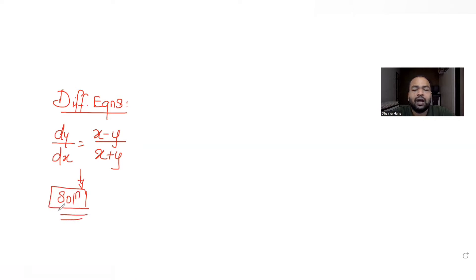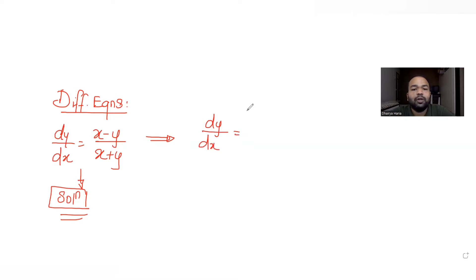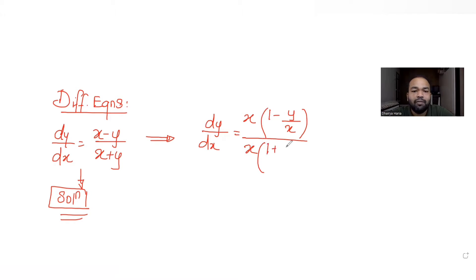So let's understand how to find the solution for this differential equation. When I have dy/dx in terms of x and y, what I can do is take x common from the numerator — it becomes 1 minus y/x — and again from the denominator take x common, so that x cancels out, giving 1 plus y/x. So now you can cancel x from both sides.